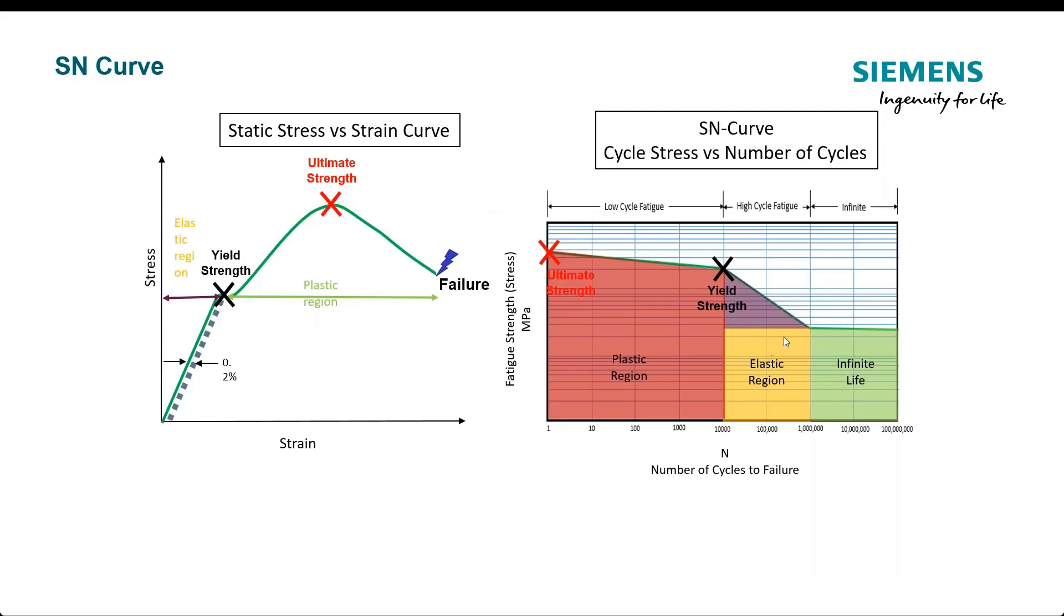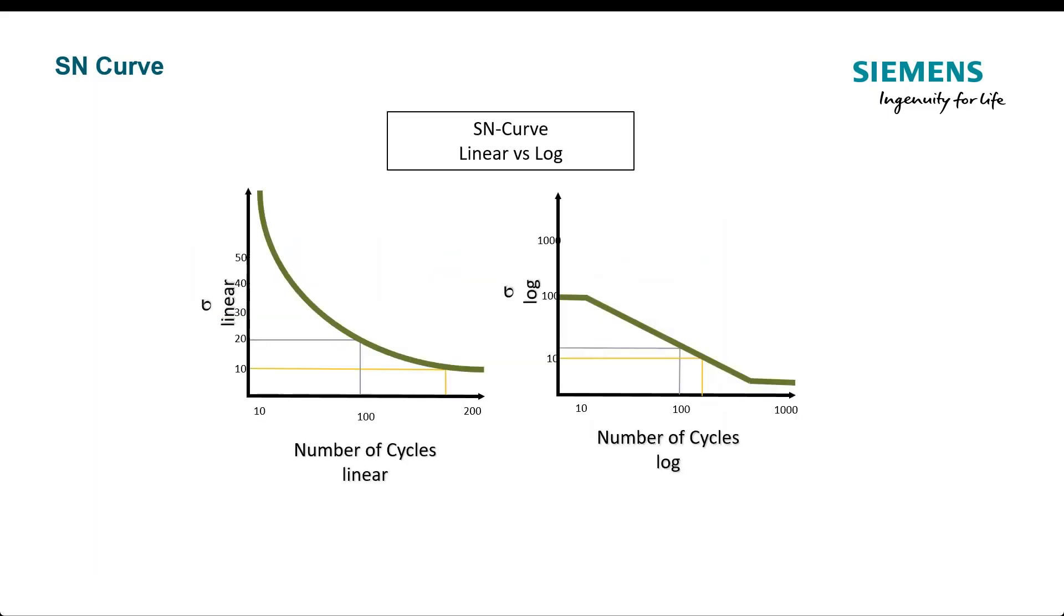So again, let's just put some of these points, and these are qualitative approximations, so this can change a lot of the areas. Like the ultimate strength, we fail at one cycle. We're generally going to see an SN curve, I've always seen it on a log-log scale, because we like straight lines. They're easier to work with than on this linear scale. But you can see here, we have a big curve here, we have a straight line.